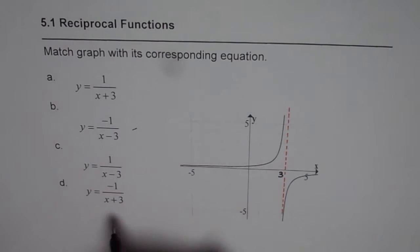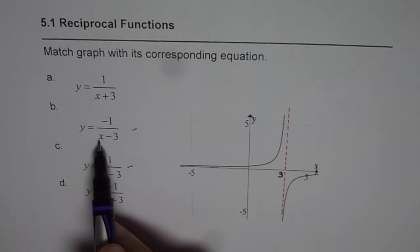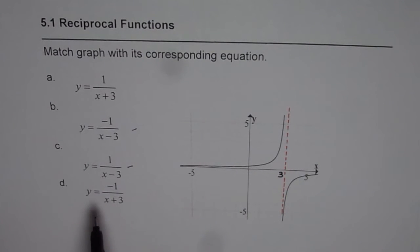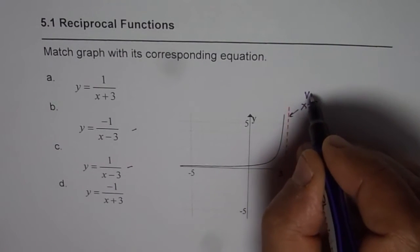So this could be one of the answers or the other one could be part c. In both these equations if I substitute 3 for x I get 0 in the denominator. So we do have a vertical asymptote at x equals to 3.